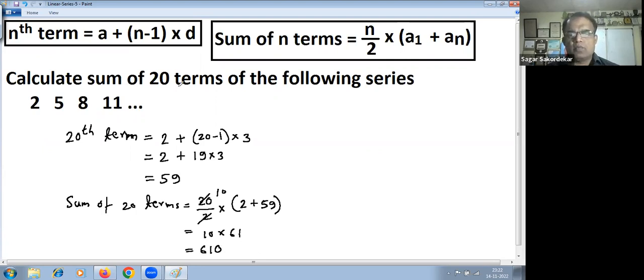So sum of 20 terms of this series, that is 2, 5, 8, 11, and so on, is 610. Let's take another example.